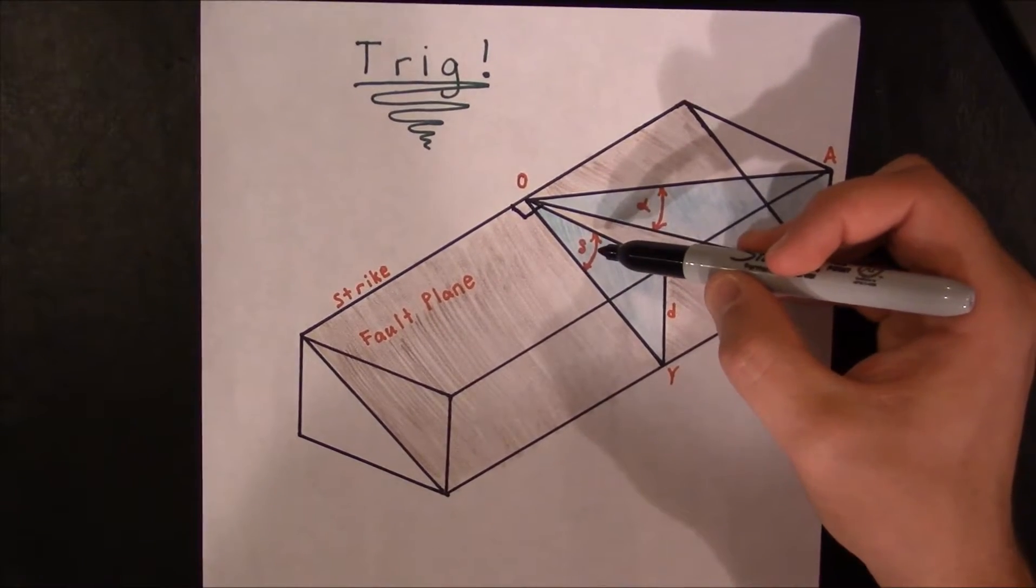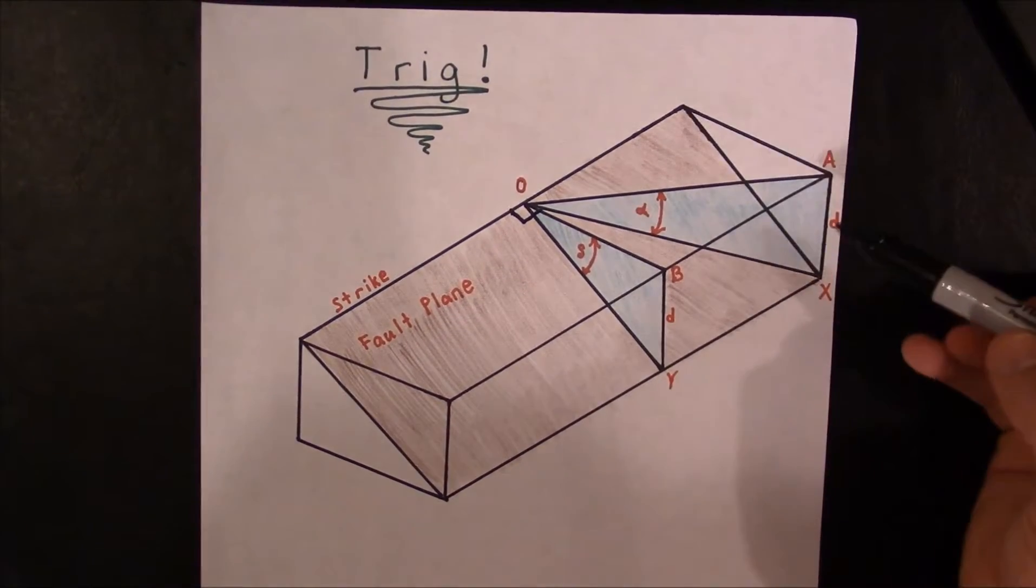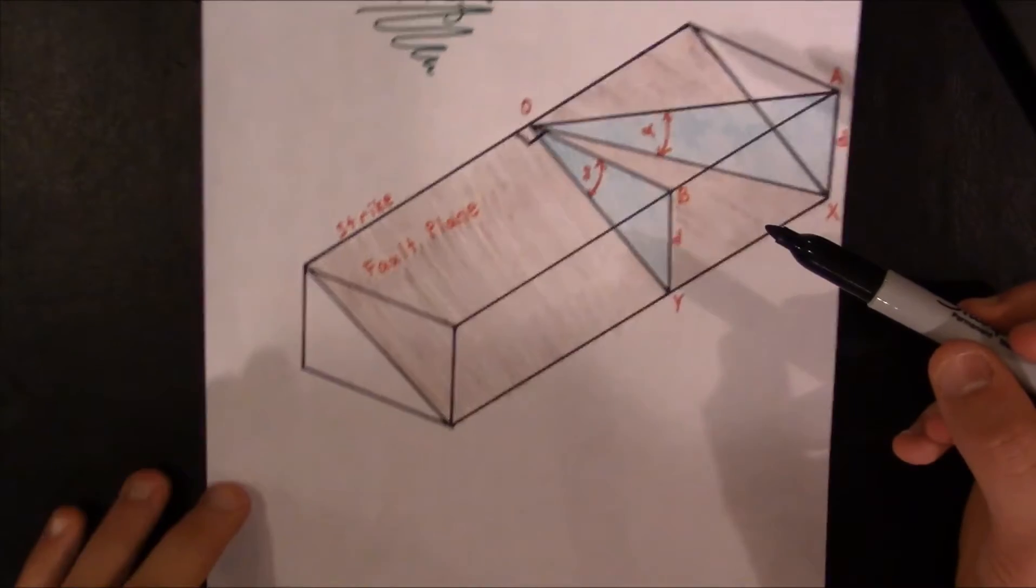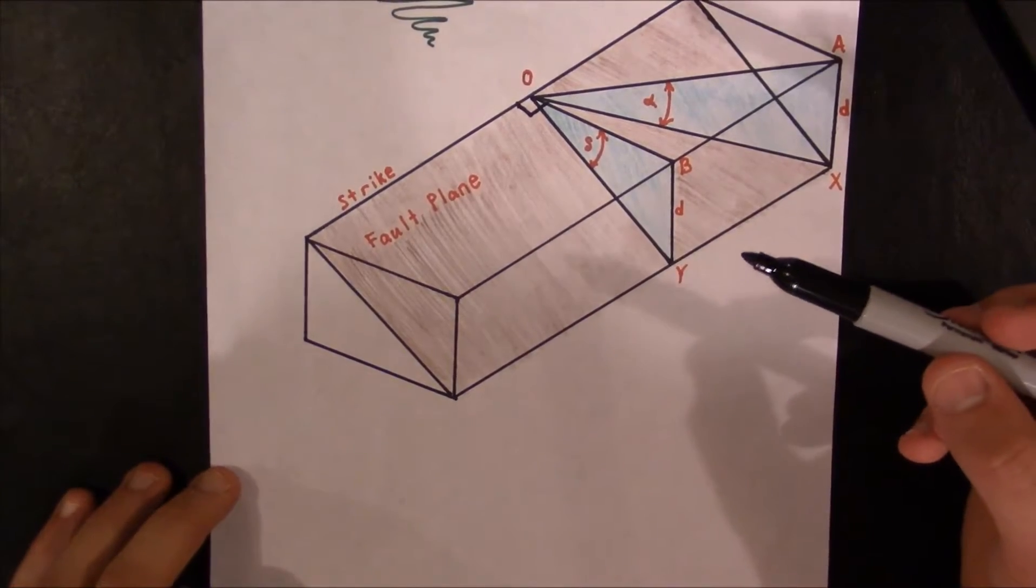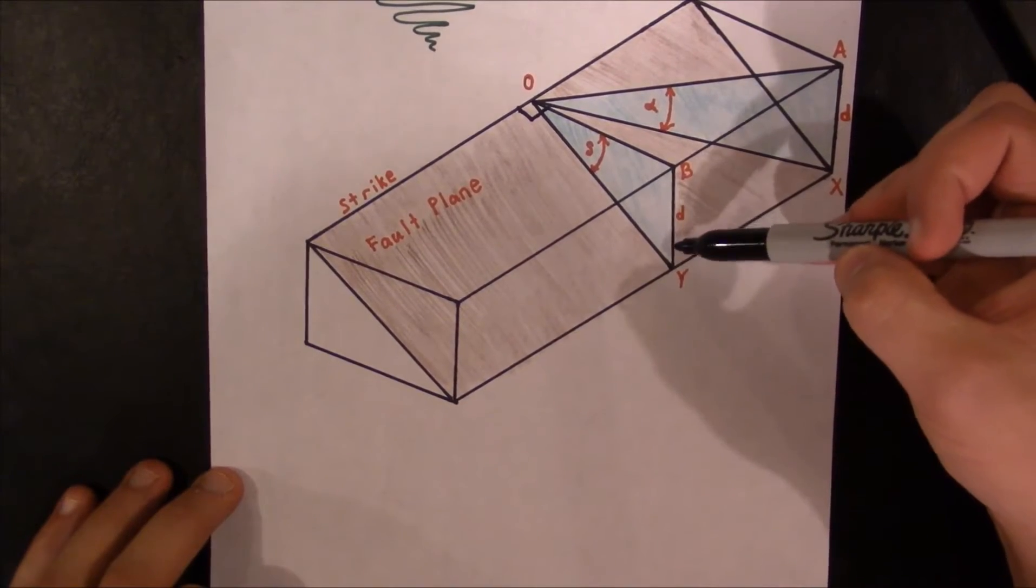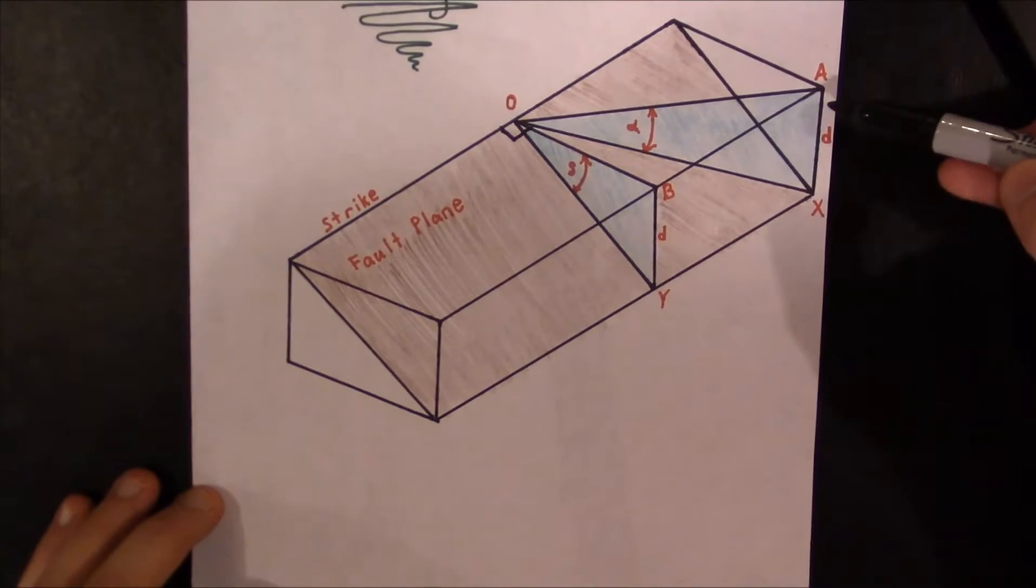So if we're wanting to know the true dip of the plane and we know some of the values of the apparent dip, we can solve this trigonometrically. So the first thing we want to recognize is the fact that the height of this block, D, is the same here and the same here.